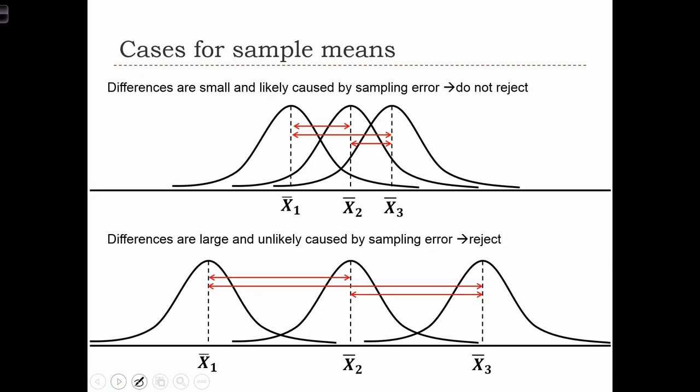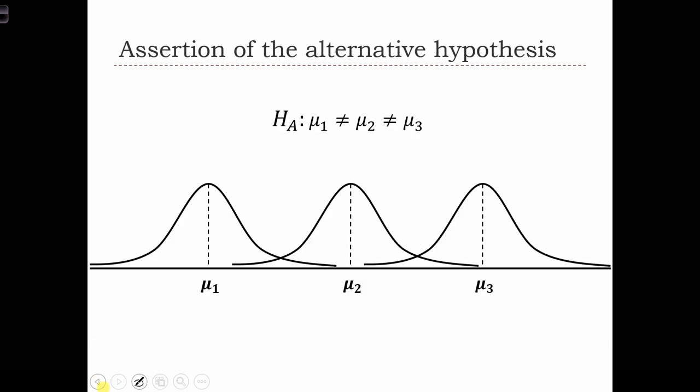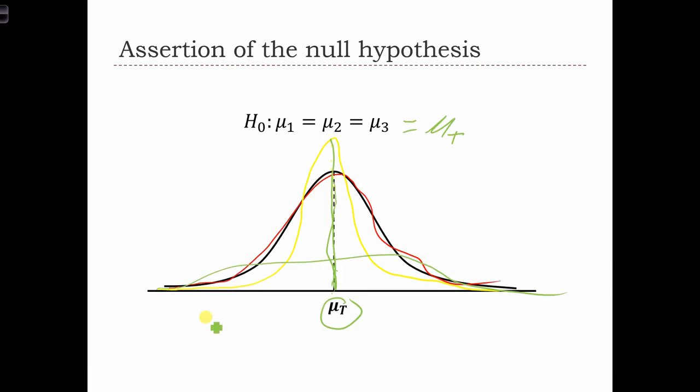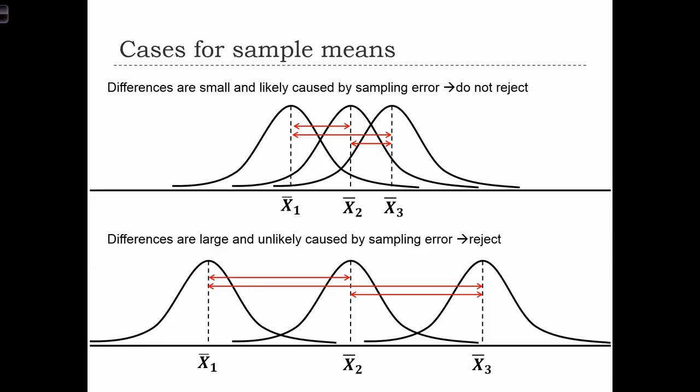So when we're dealing with samples, how can we use the sample means of the three distributions to determine which of those two cases is correct? Is it more likely that the alternative hypothesis is correct? Or is it more likely that the null hypothesis is correct? Well, if we plot the three sample distributions with their means, we can look at the differences between their means and calculate them.